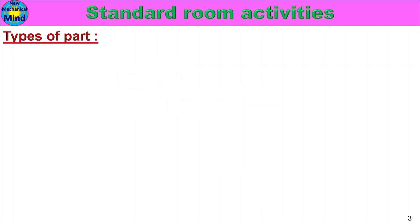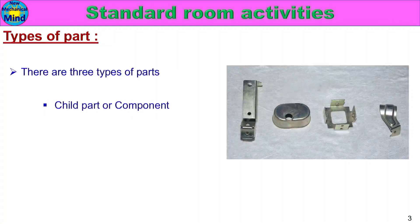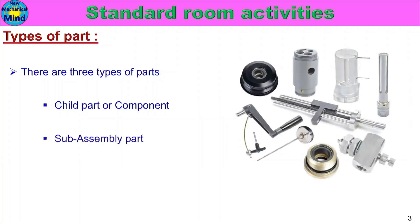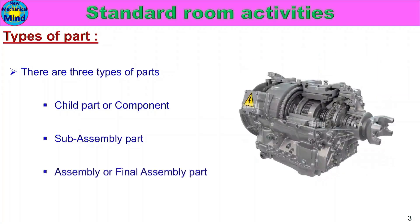Types of Parts. There are three types of parts. First, Child Part or Component. Second, Sub-assembly Part. Third, Assembly or Final Assembly Part — that is the entire assembly we can use. In these three categories, we can include three types of parts.